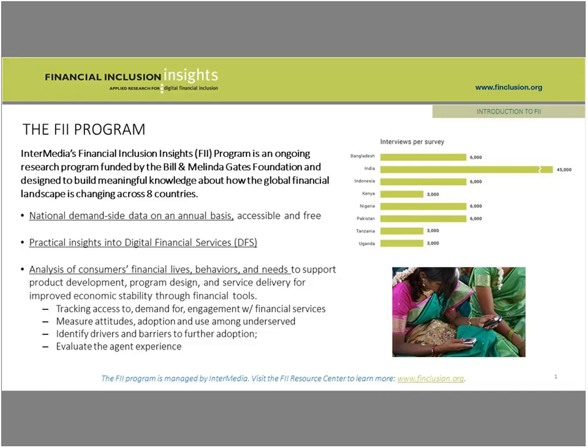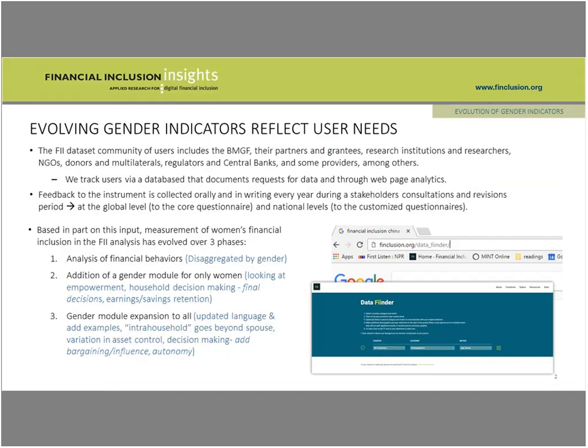I also wanted to speak about how you can access the data, the kinds of users that use our data, and how the gender modules within the data have evolved over time. While initially we were really focused on the needs of the Bill and Melinda Gates Foundation, increasingly their partners, grantees, research institutions, researchers, nonprofits, donors, regulators, and central bankers use the data. One group that we wish was using it a bit more are providers — they have lower awareness and aren't using it quite as much.